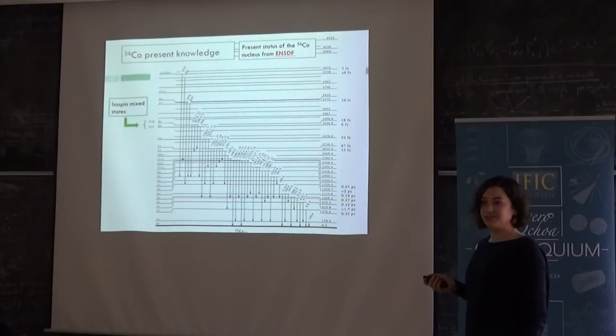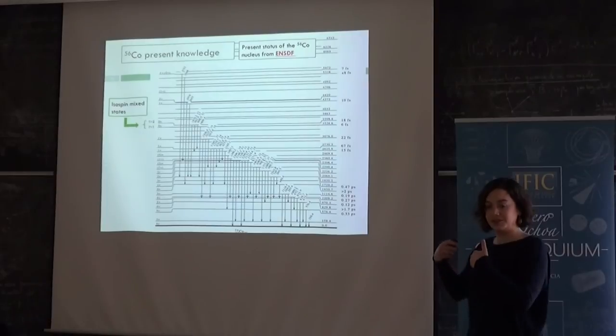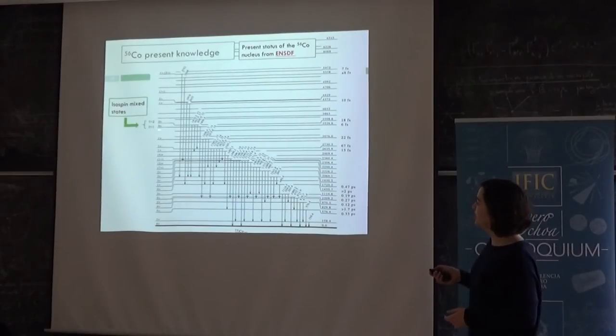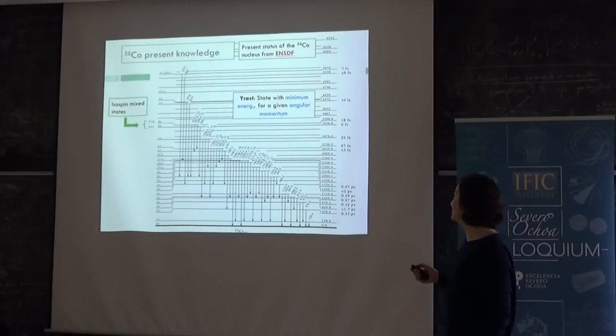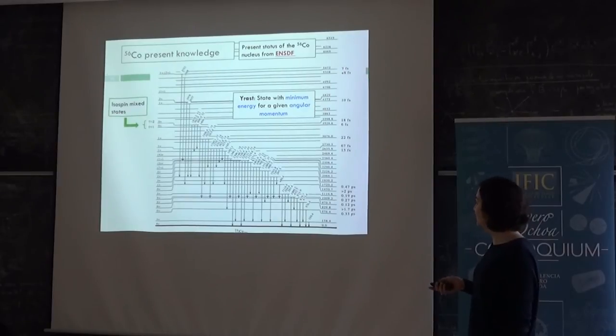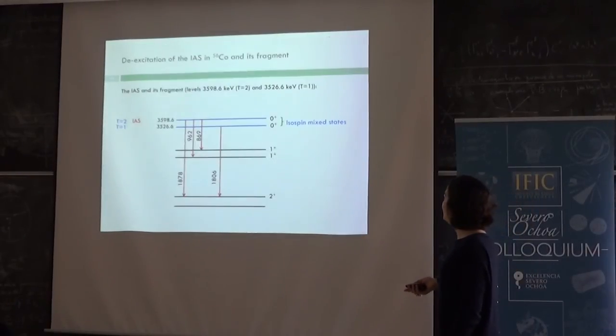Here I show the information that is known so far about the 56-cobalt. It looks like it is really well known, but you will see that there is much, much new information about this nucleus. Here you have the two zero-pluses that are isospin mixed and they are the ones that we wanted to study. And now, to explain what means yrast. The yrast is a state with minimum energy for a given angular momentum. This means that those states are non-yrast. This means that, for example, the minimum energy for zero-plus would be this one. There is another spin parity at lower energy, so this would be the yrast. And then when you go higher in energy, you reach different non-yrast states.